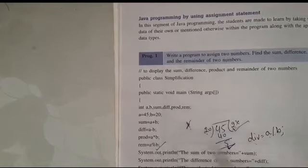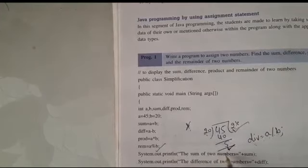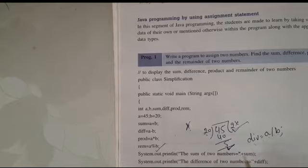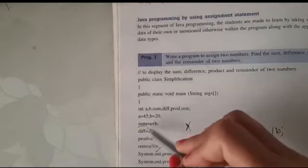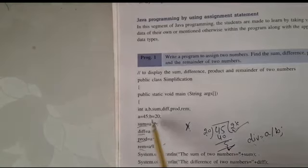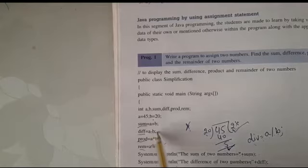Now we will print the values using System.out.println. First we will print the sum: the sum of 2 numbers is equal to, written in double quotes, plus the variable sum. Here, the value of sum will print — which will come after the addition of 2 numbers. Then System.out.println: the difference of 2 numbers is equal to, plus diff — the result of these numbers will print here.